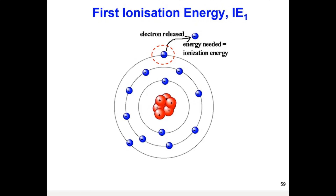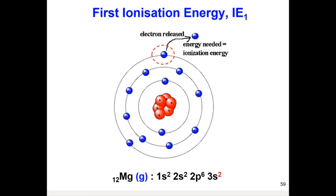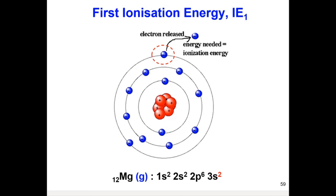This diagram here represents the atom of element magnesium. Magnesium has 12 proton number. This magnesium atom consists of 12 protons in the nucleus and 12 electrons around the nucleus — two electrons in the first shell, eight electrons in the second shell, and two electrons in the outermost shell, which we call valence electrons.